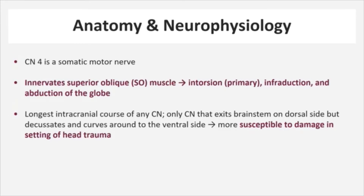Cranial nerve 4 is a somatic motor nerve that innervates the superior oblique muscle. This muscle's primary function is intorsion, whereas infraduction and abduction of the globe are secondary functions. The function of the superior oblique muscle is best observed when the eye is adducted, as this allows for enhanced infraduction of the globe via the superior oblique muscle.